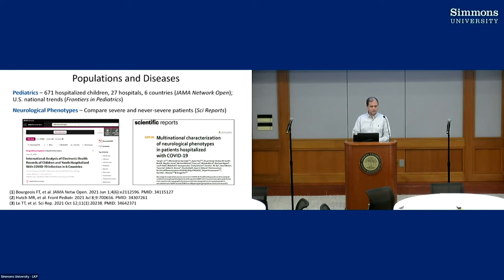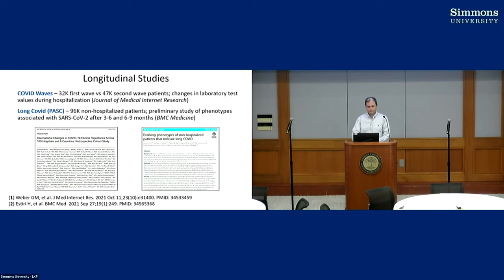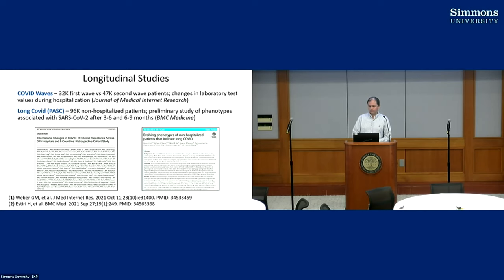4CE has looked at different diseases and populations through different working groups. Each working group develops R or SQL code that we distribute to sites. We've had an active pediatrics group that has done studies looking at 671 hospitalized children across 27 hospitals in six countries, as well as studies on other diseases such as neurological phenotypes. We've also conducted longitudinal studies looking at different COVID waves, long COVID, and PASC.